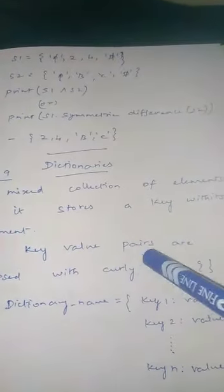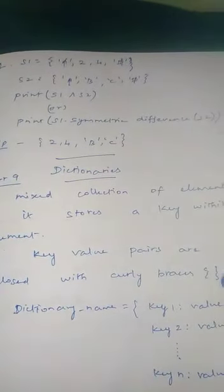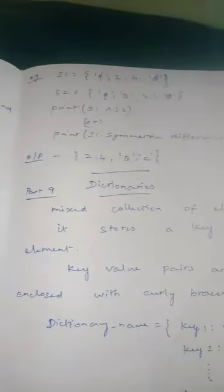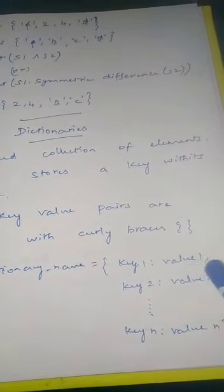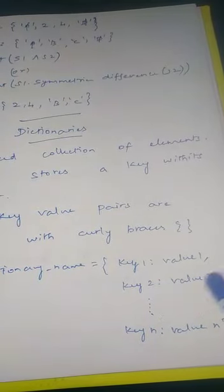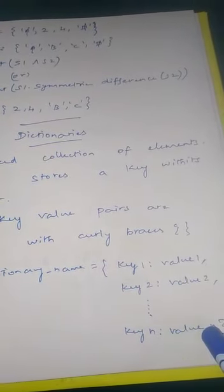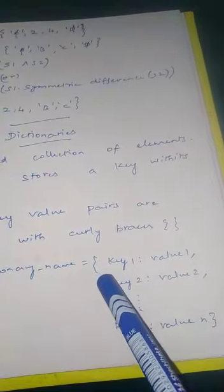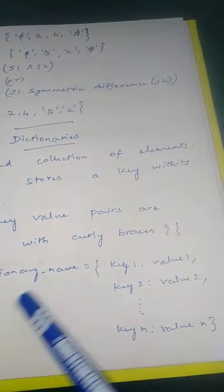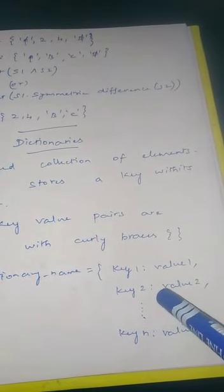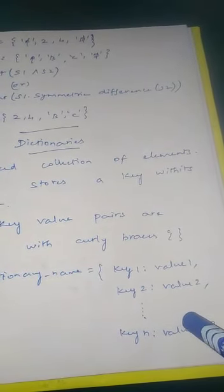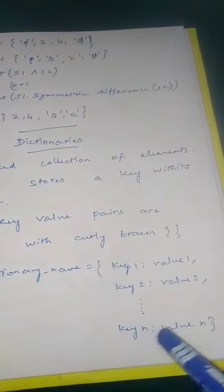Key-value pairs are enclosed within curly braces. The syntax is: dictionary_name = {key1: value1, key2: value2, ... keyN: valueN}. Here also we use curly braces like set, but the dictionary uses a key with its value. Like that you can give any number of key-value pairs.